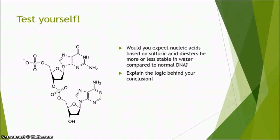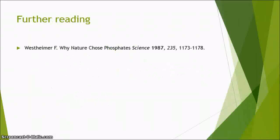Now we arrive at the point where you can test yourself. I have drawn a DNA analog where I substituted the phosphorus with sulfur. What do you think — will this be more stable than normal DNA, as stable, or even less stable? Please include your reasoning and use the concepts we encountered during this video. I had a great time and I hope you can now appreciate the importance and beauty of phosphates in nature. If you are a die-hard chemistry fan, I would suggest reading the great paper 'Why Nature Chose Phosphates' by Westheimer — it is enlightening, very well written, and I'd even say it is a modern classic. Enjoy!